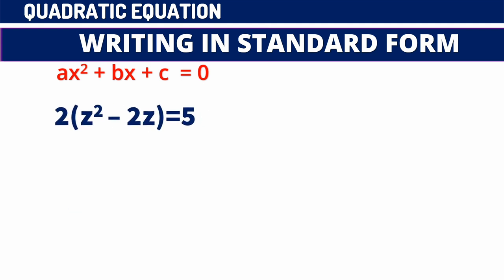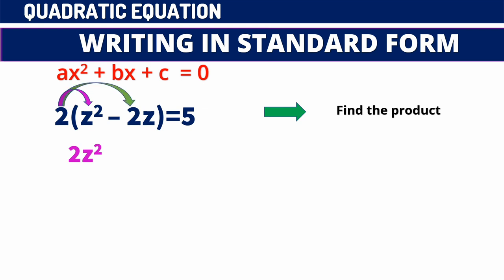Another example: 2(z² - 2z) = 5. Notice we use z as our variable — any letter can be used as a variable. We need to get the product first by applying the distributive property. We multiply 2 by the first term: 2 times z² gives 2z². Then we multiply 2 by the second term: 2 times -2z gives -4z. So we have 2z² - 4z = 5.